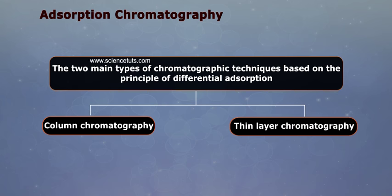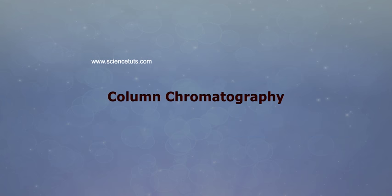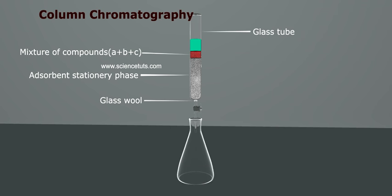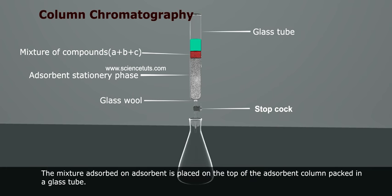Column Chromatography involves separation of a mixture over a column of adsorbent stationary phase packed in a glass tube. The column is fitted with a stopcock at its lower end. The mixture adsorbed on adsorbent is placed on the top of the adsorbent column packed in a glass tube.